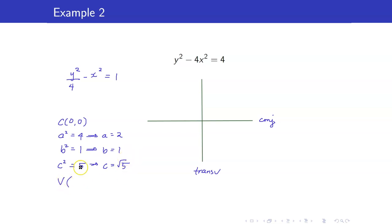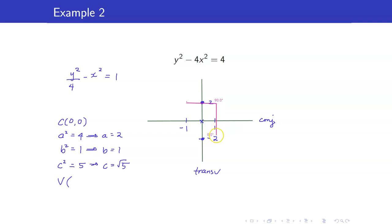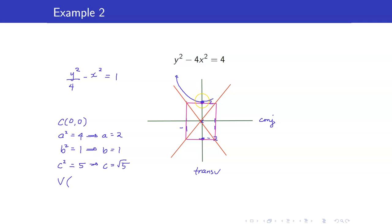Our vertices lie along the transverse axis A units from the center: vertex at (0, 2) and (0, −2). For the auxiliary rectangle, we go 1 unit along the conjugate axis. Drawing the diagonals gives the asymptotes, and the hyperbola opens upward and downward, approaching the oblique asymptote lines.